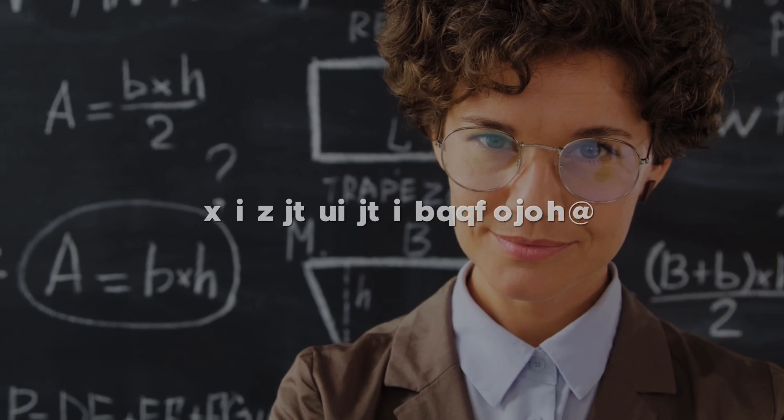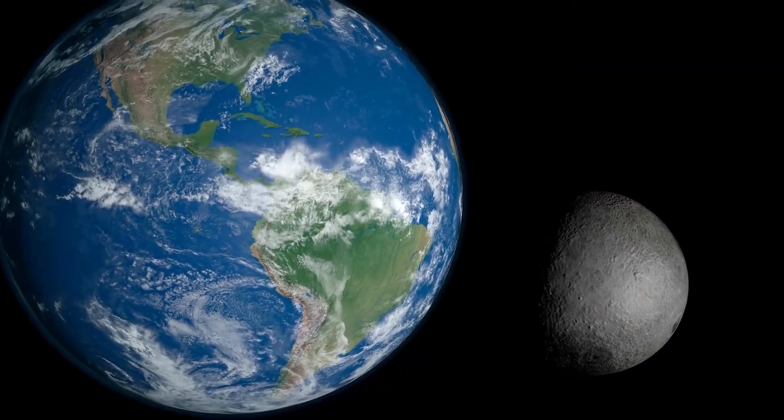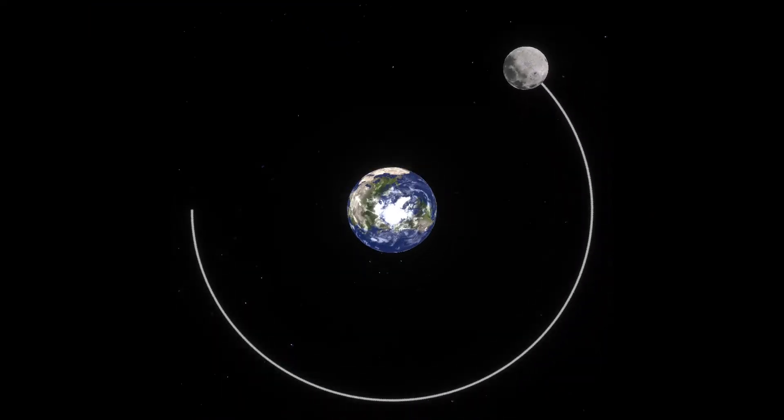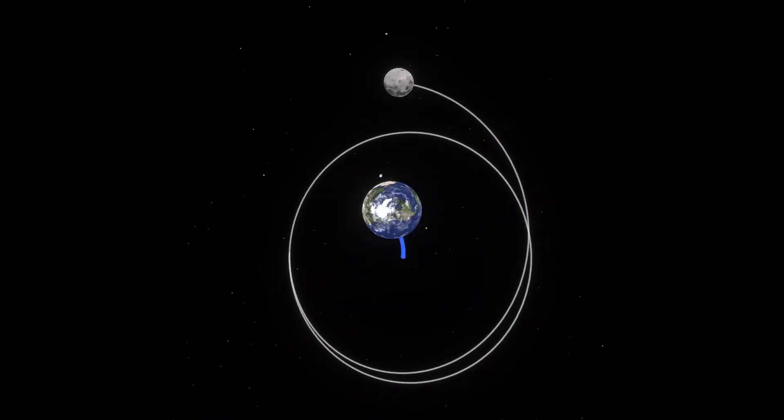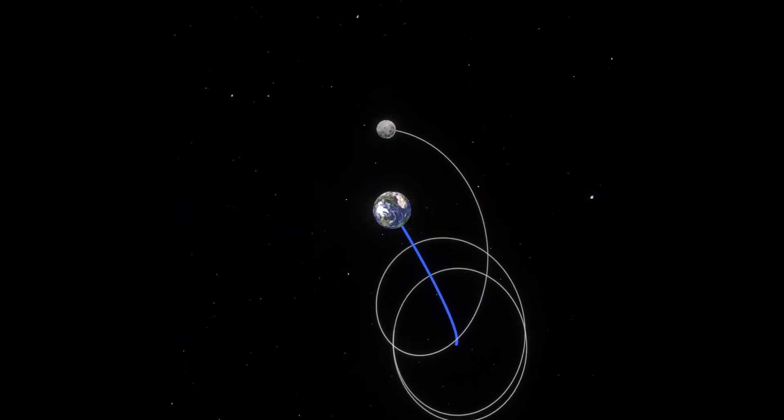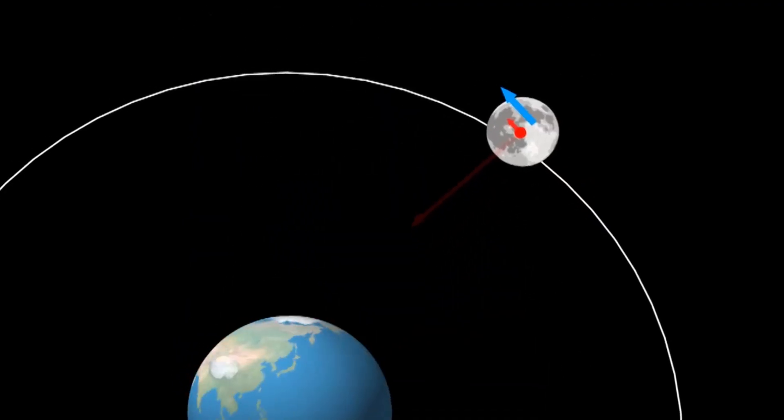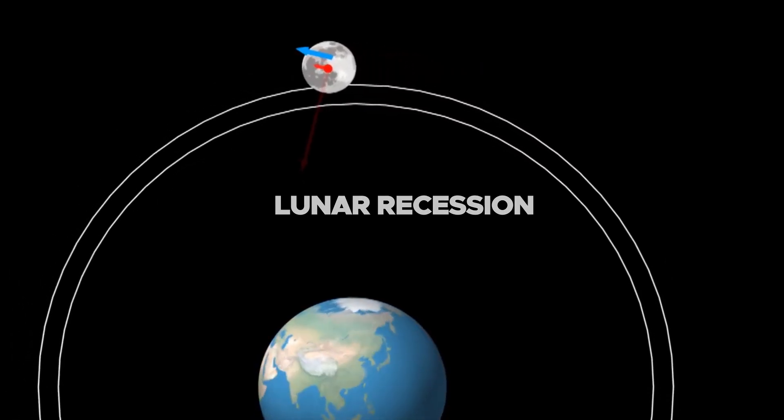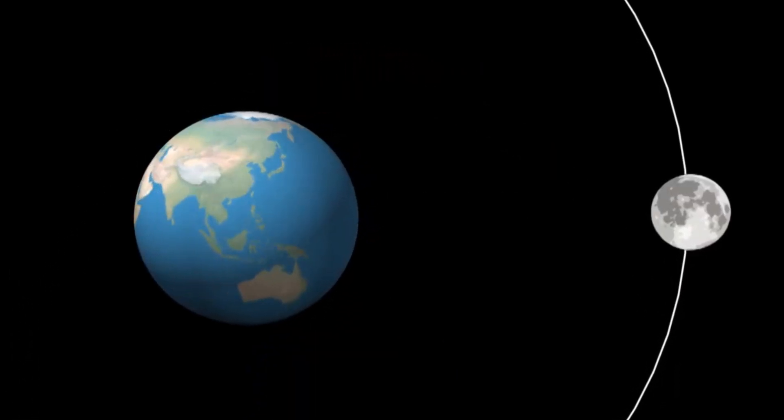So, why is this happening? The explanation hinges on two primary factors: the rotational dynamics of both the moon and Earth, and the gravitational interplay between the two celestial bodies. The phenomenon of the moon moving away from Earth is termed lunar recession, and it arises from the rotational motions of both the moon and Earth.